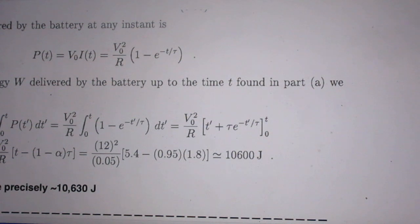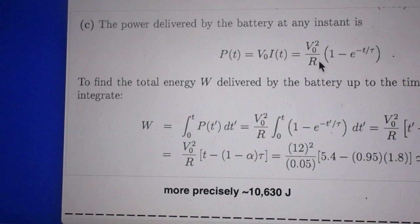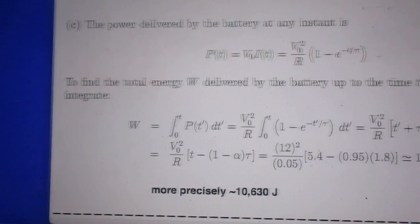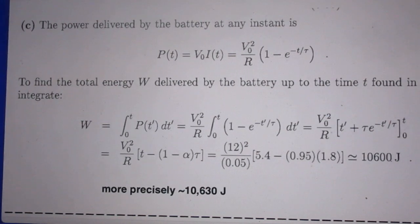Okay. Let's now go to C. The power delivered by the battery at any instant is P as a function of time, which is V0 times I as a function of time. So it is V0 divided by R times this function. To find the total energy W delivered by the battery up to time T, which I found in part A, we integrate.